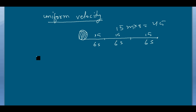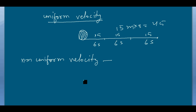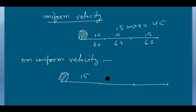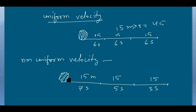There is also non-uniform velocity. If an object covers equal displacement in unequal intervals of time — suppose it covers 15 meters, 15 meters, and 15 meters, but takes 7 seconds, 5 seconds, and 3 seconds respectively — then the object covers each displacement segment in unequal time intervals, so we say the object has non-uniform velocity.